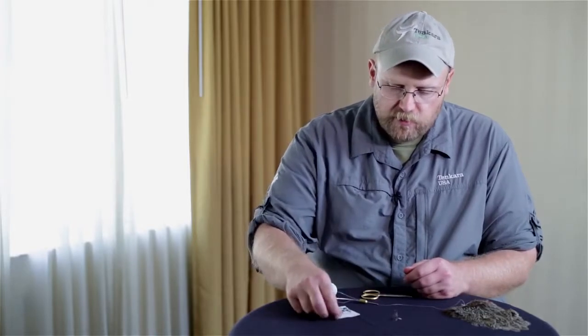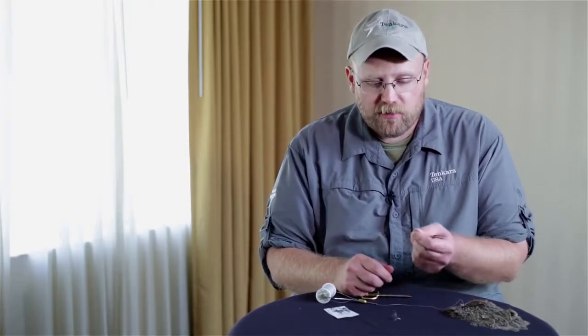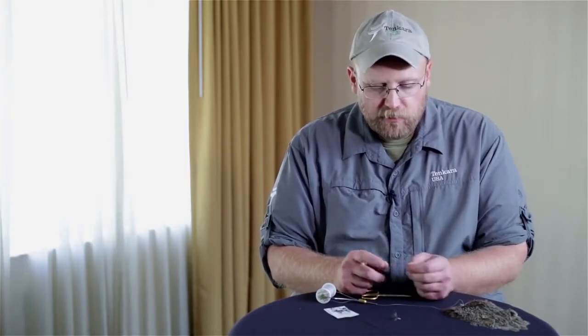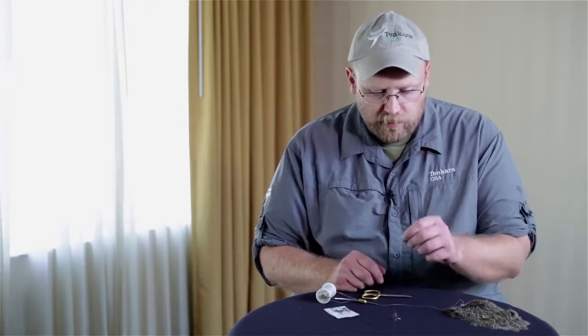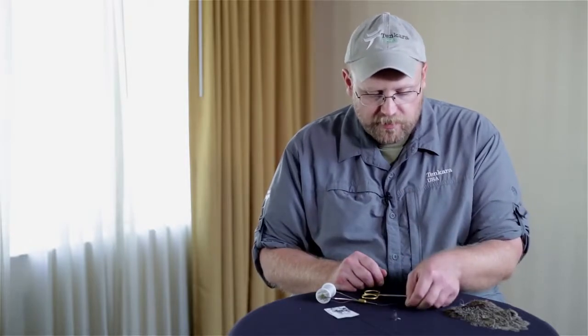I'm going to start out with the TMCO 206 BL hook. You can use any hook. It doesn't even have to be a fly tying hook, especially if you're fishing for species like bass and bluegill. I do think there's some really great trout hooks out on the market. Both eyed hooks and some of the cool hooks that a lot of Tenkara anglers use are actually eyeless hooks, and you can look around and find those online too. So I'm going to start out with my size 12 206 BL hook.